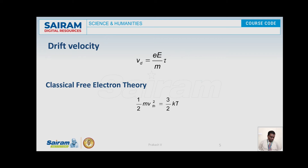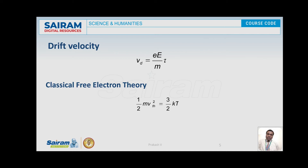Now I am going to explain drift velocity. On the application of an external electric field, the electrons move in a direction opposite to the direction of the applied field. This type of motion is known as drift motion and the velocity acquired by the electrons is known as drift velocity, denoted by symbol Vd. The drift velocity Vd is given by Vd = (eE)/(mτ), where e is the charge on the electron, E is the strength of the applied field, m is the mass of the electron, and tau is the mean collision time.